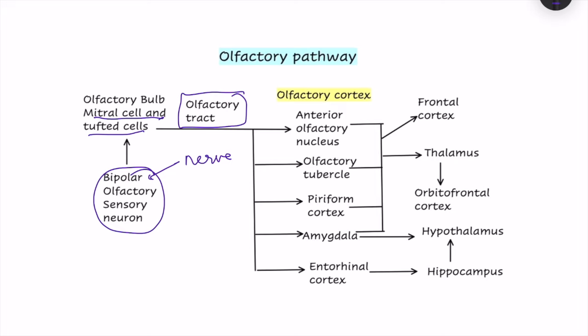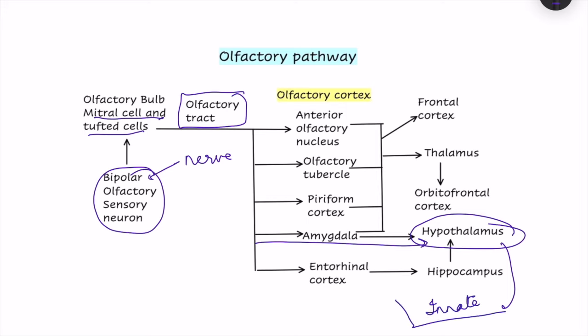The axons of mitral and tufted cells form the olfactory tract reaching various cortical areas. The most primitive pathway goes directly to the hypothalamus and is responsible for basic olfactory reflexes such as licking of the lips and salivation — these are innate, not learned reflexes. This primitive pathway does not pass through the thalamus.